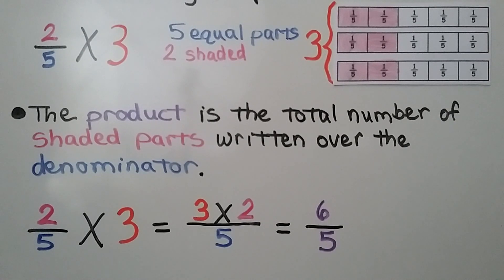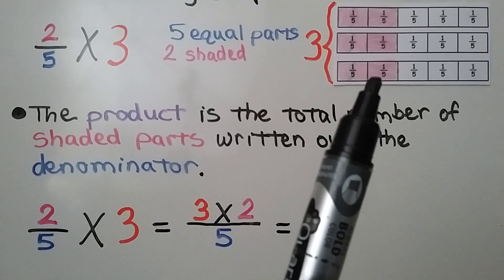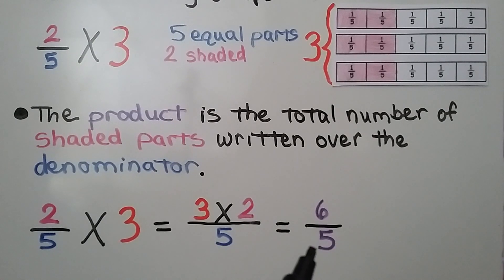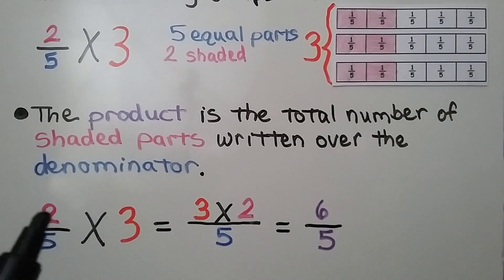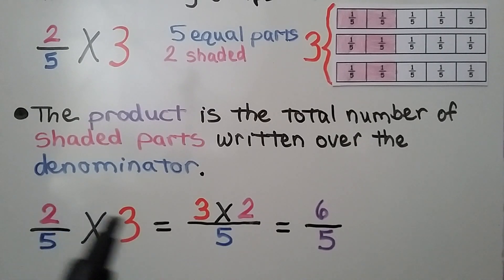The product is the total number of shaded parts. We count 1, 2, 3, 4, 5, 6 of them, written over the denominator 5. We have 6 fifths. We did 2 — the numerator — times the whole number 3, that's 6, and we used the same denominator.